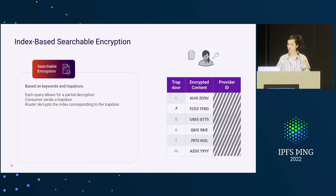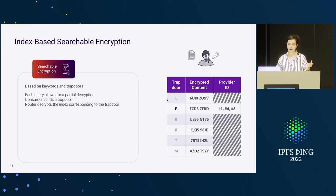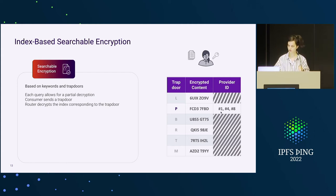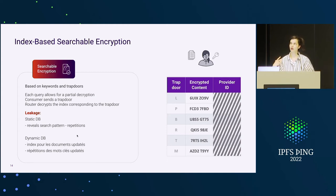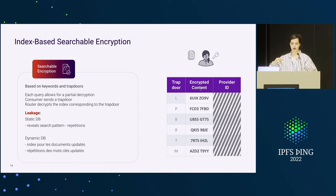The router finds the correct line because the consumer also sends the encrypted content ID, which is a deterministic encryption, to compare and know which line to decrypt. Generically, this has some leakage — if it's static, we know the search pattern, we see repetitions and similar things. In a dynamic database that allows for updates, we can reveal even more to the router. Maybe that's not a problem in our context — I think we are safe here because it's the provider who updates these records.